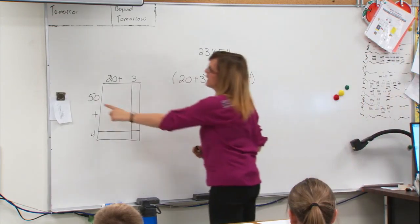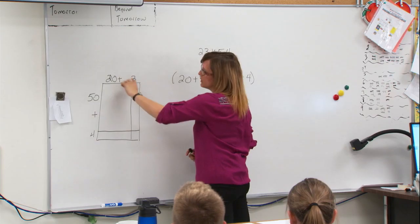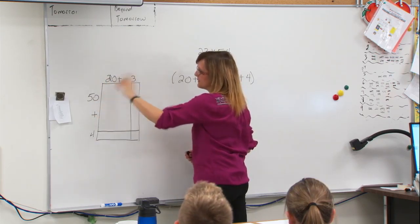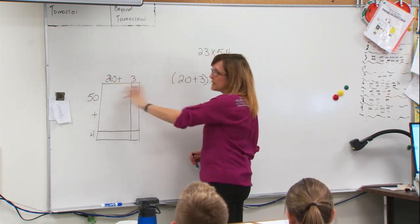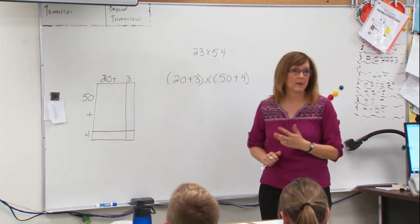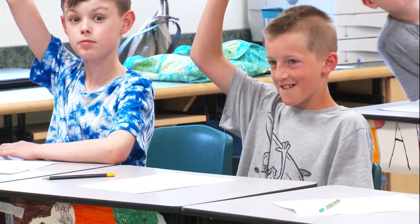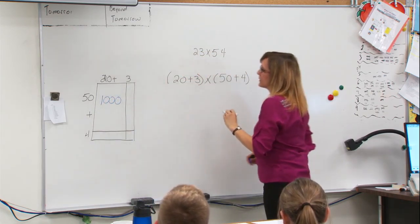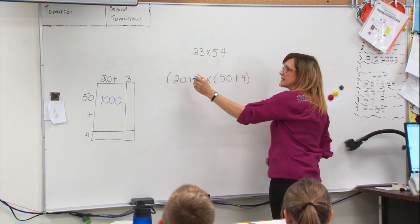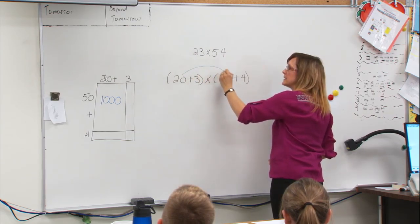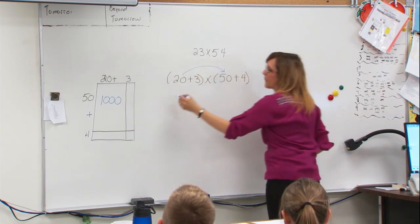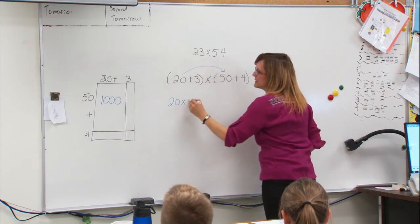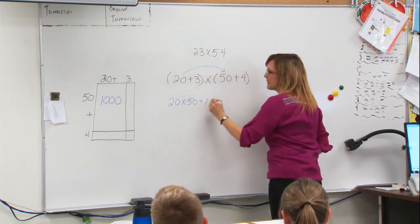So if we were to start by looking at this array here, which is 20 times 50, can anyone tell me how many parts or how many squares would be in that array? Owen? 1,000. That's correct. 1,000. And over here we can see in the question itself, here's our 20 times 50. And 20 times 50 equals 1,000.